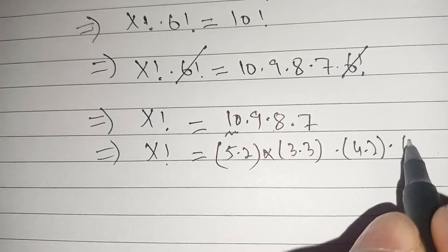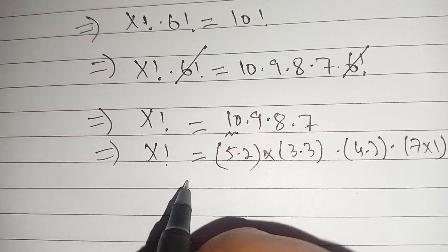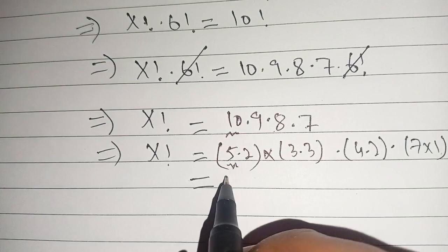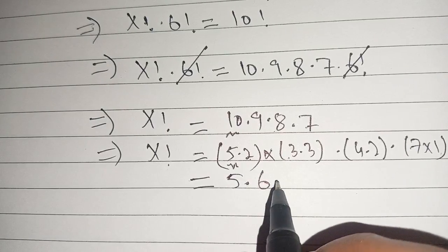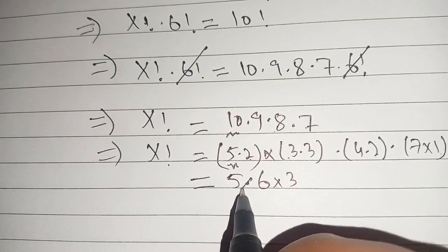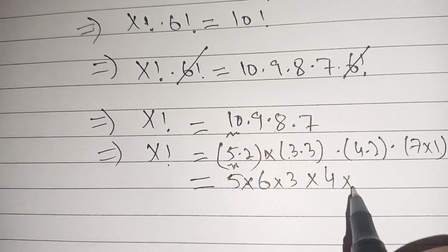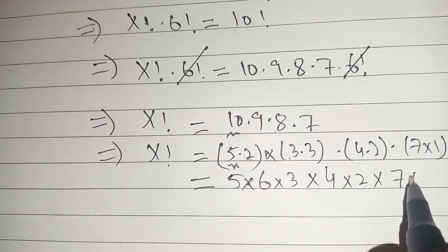Now we get 5, and 2 times 3 becomes 6, times 3 times 4 times 2 times 7 times 1.